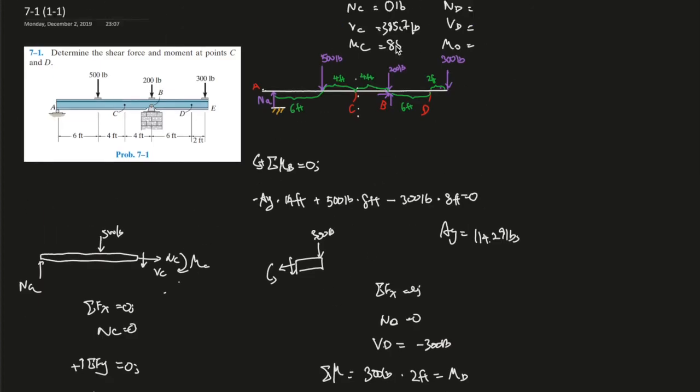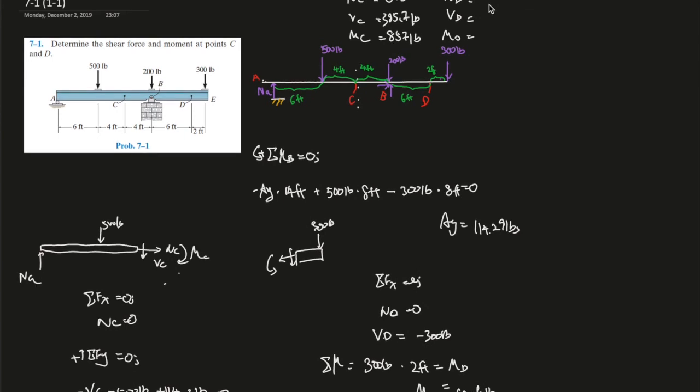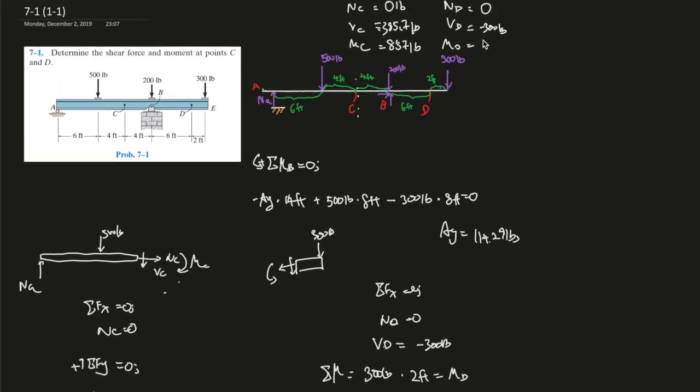Normal force at D is zero, shear force is negative 300 newtons, and moments at D is 600 foot pounds. Oh yeah, negative 300 pounds not newtons. All right, this is it for question one. Relatively simple question in this chapter 7. So yeah, hopefully this was helpful and I'll see you in my future videos.